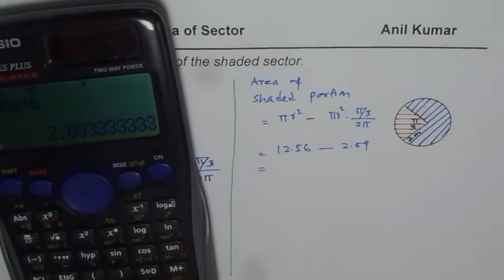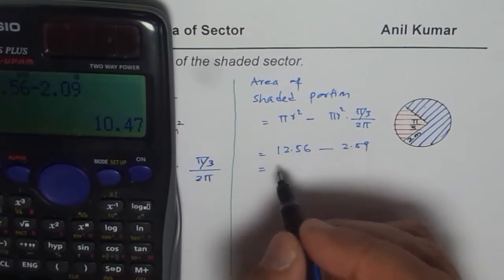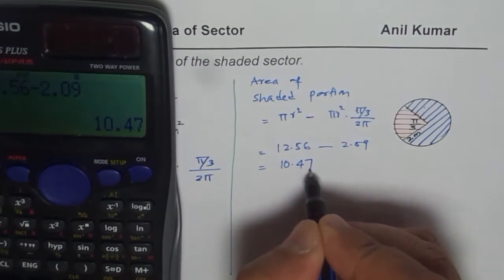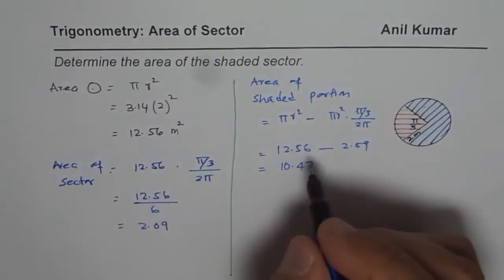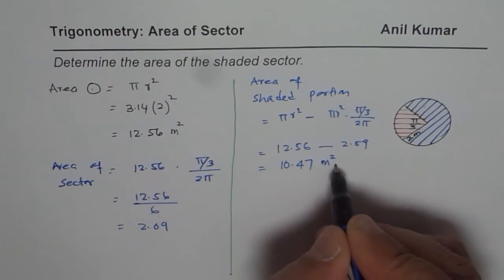So let us take away and figure it out. We get 12.56 minus 2.09 equals to 10.47. So area of the shaded portion is 10.47 meters squared.